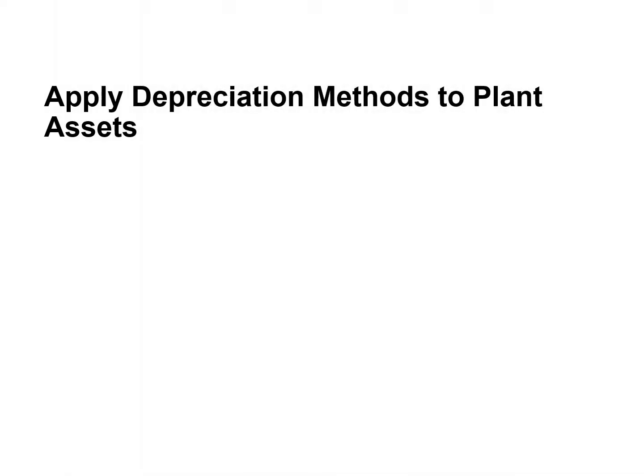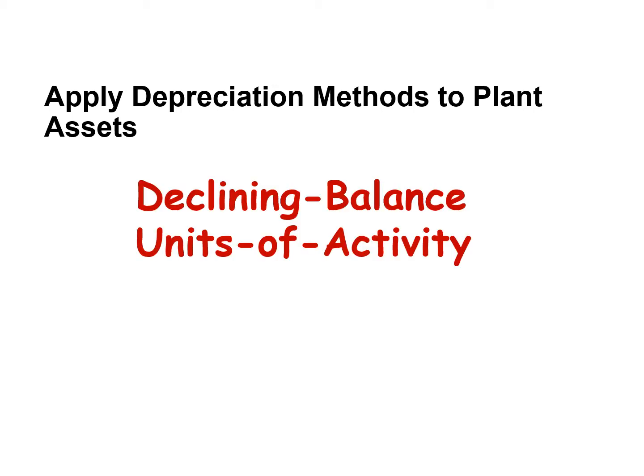The previous video covered straight line, so this video will discuss the other two methods: declining balance and units of activity, which is also referred to as units of production.